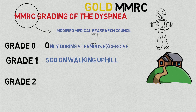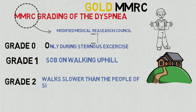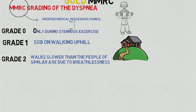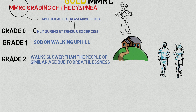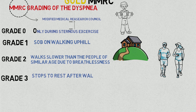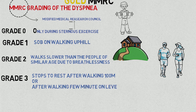A patient is said to be grade 2 of dyspnea when he or she walks slower than people of similar age due to breathlessness. In grade 3, a person stops to rest after walking 100 meters or after walking a few minutes on level ground.